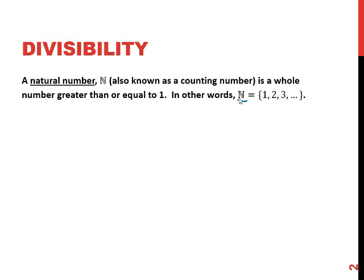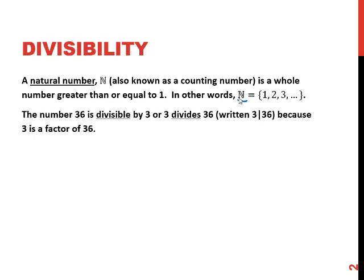Now the idea of divisibility comes from numbers being multiplied by each other or factors. The number 36 is divisible by 3, or we say 3 divides 36, because 3 is a factor of 36. 3 is something that goes into 36. We'll use this symbolism to denote that 3 divides 36 or 36 is divisible by 3.